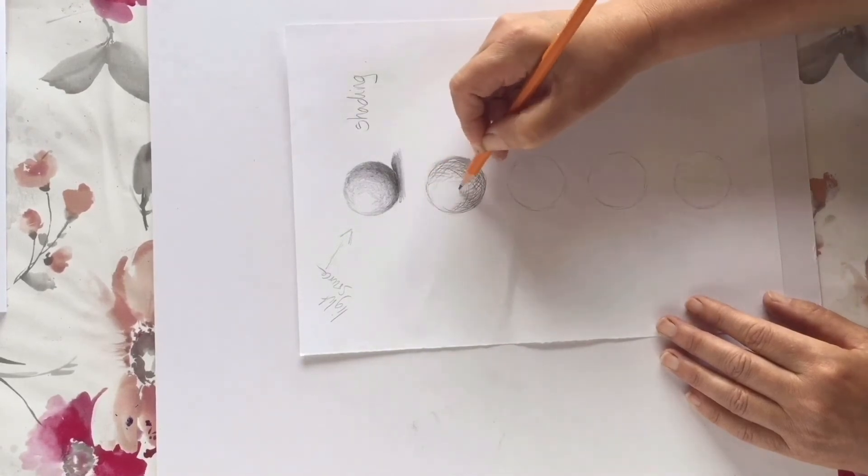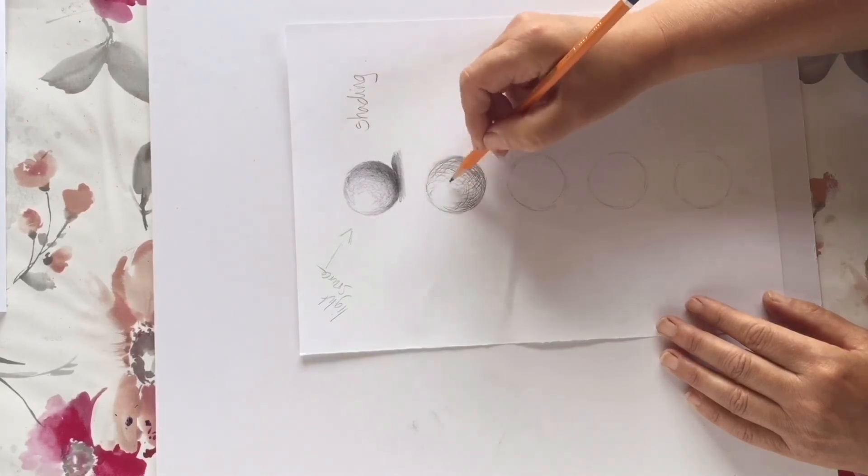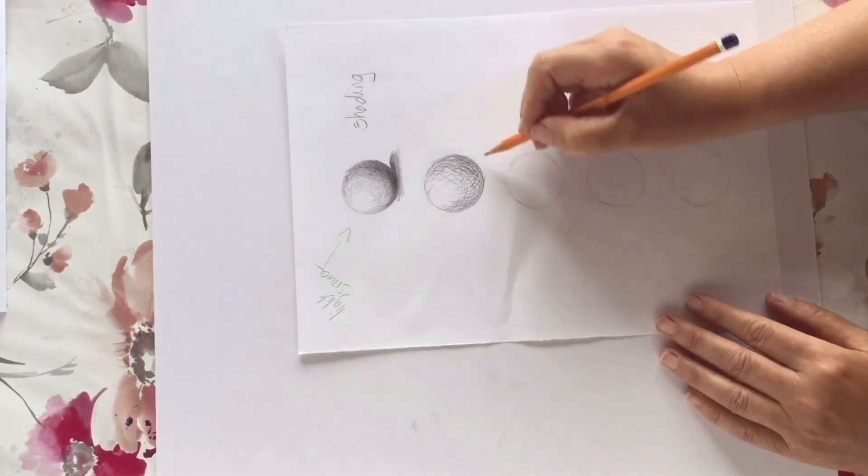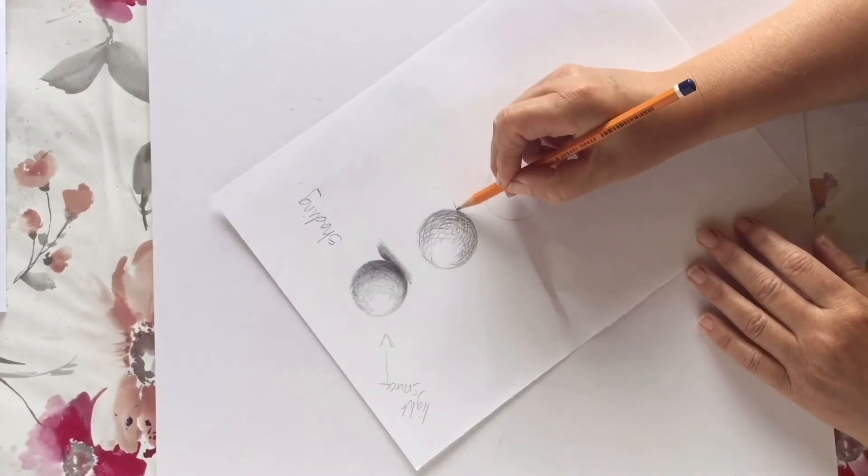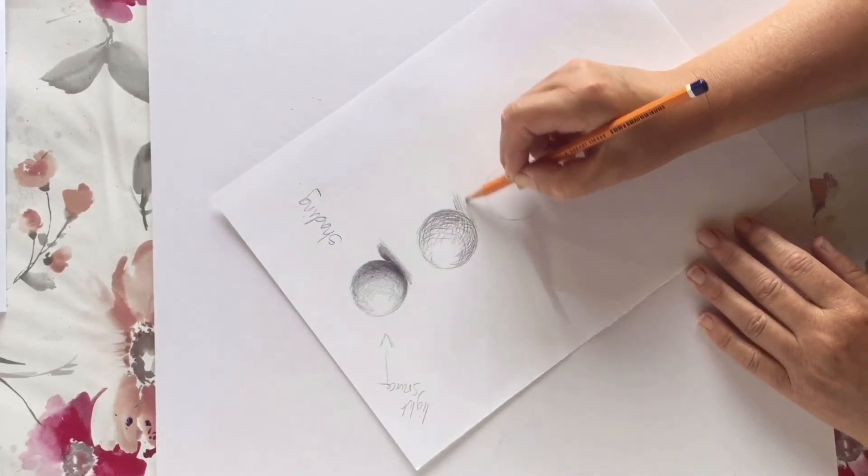When it comes to the shadow underneath it, I want to give the impression that the ball is sitting on a flat table. I'm not going to use circular lines for that. I'm going to be doing straight lines, but still criss-crossing each other.